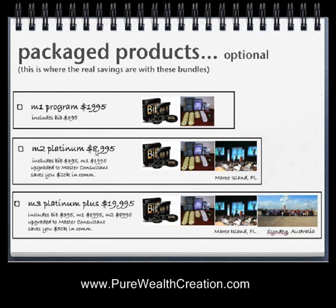We do have packaged products, which are optional as well — this is where the real savings are with these bundles. The M1 includes your Business in a Box for $1,995. The M2 Platinum at $8,995 includes your Business in a Box, your M1, and also the Marco Island event. Your M3 Platinum Plus includes your Business in a Box, your M1, your M2 at Marco Island, and your Sydney, Australia event. Plus, it upgrades you to Master Consultant across the board for M2 and M3, which saves you about $50,000 in commissions.